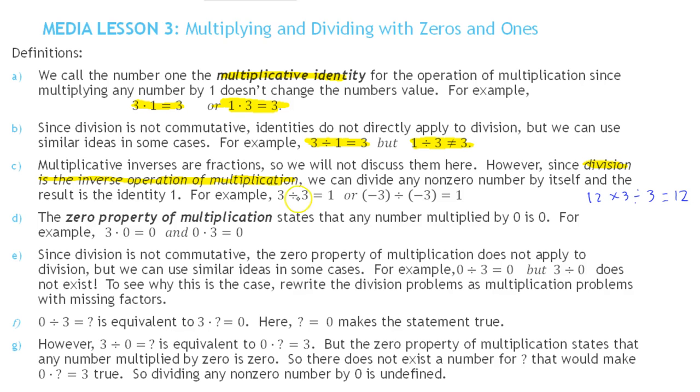We can use that fact to know that dividing a number by itself is 1. This is because it's the inverse operation. 3 divided by 3 is 1.